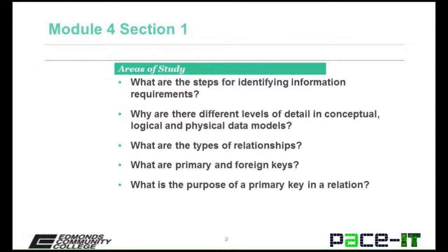The areas of study for Section 1, Module 4 — these are the questions you should be able to answer when you're finished with this module. What are the steps for identifying information requirements? Why are there different levels of detail in conceptual, logical, and physical data models? What are the types of relationships? What are primary and foreign keys? What is the purpose of a primary key in a relation?